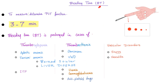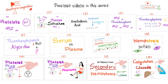In the previous video, I talked about bleeding time — it measures or determines platelet function. Normally it's three to seven minutes. Bleeding time is prolonged in cases of thrombocytopenia, thrombasthenia, and vascular disorders. This is my playlist on bleeding and coagulation disorders — please watch these videos in order, and I promise you, you will love hematology.